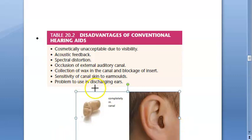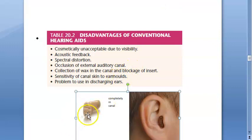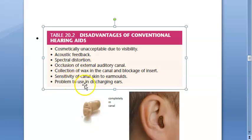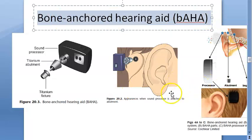Further disadvantages of conventional hearing aids include canal blockage, sensitivity of the canal skin to the ear mold material, and problems in certain pathologies — for example, in a discharging ear you cannot use conventional hearing aids. In the next video we will cover bone-anchored hearing aids.